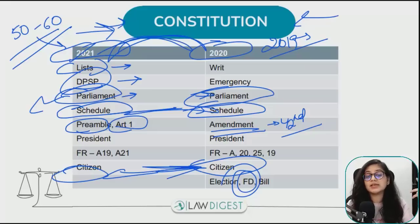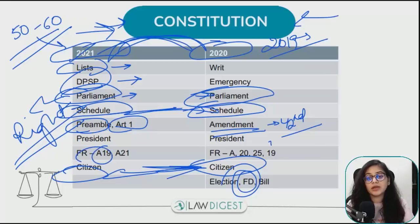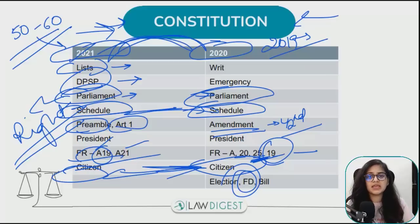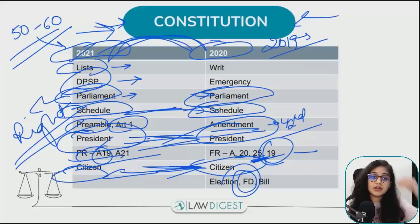आप present current affairs से relate करके भी constitution based topics करें। For example, इस साल के लिए farmers' protest बहुत important है - right to protest, Article 19 में जो freedoms हम exercise करते हैं, उसमें आता है। Article 19, 21, 20, 25 - इनसे questions ज़्यादा हैं। Religion वाले articles 25 to 28 भी important हैं - इस साल ज्ञानवापी मस्जिद और hijab ban जैसे developments हुए हैं। President से topics से हमेशा questions आते हैं और this year again it is a very important topic. Emergency भी important है।